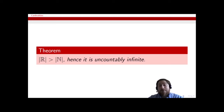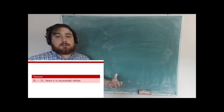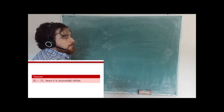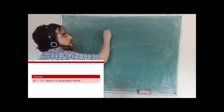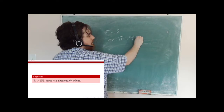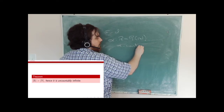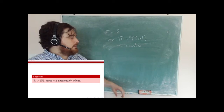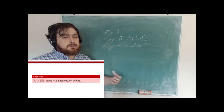Next we're going to show that the cardinality of the real numbers is strictly greater than the cardinality of the natural numbers. The size of the real numbers will not be countably infinite — it will be uncountably infinite. To show this, I need to show there are no bijections from the real numbers to the natural numbers. What I'm going to do is find a mapping alpha from R to the power set of N that is onto. If alpha is onto, then the cardinality of R is greater than or equal to the cardinality of P(N), which is strictly greater than the cardinality of N.